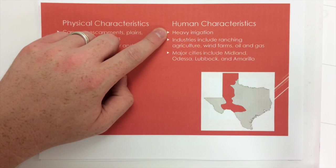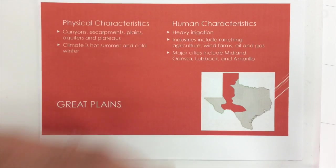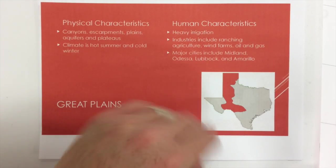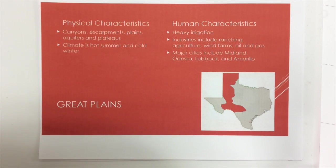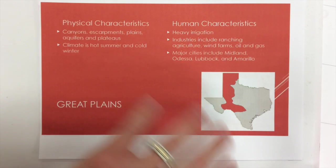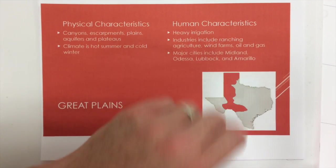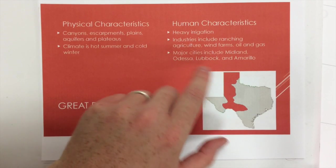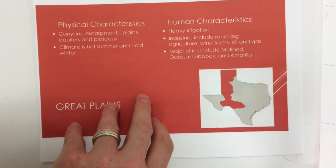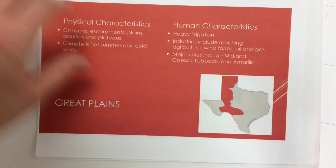The human characteristics of the Great Plains are heavily focused on irrigation, as you can see with the irrigation systems around us here at Terra Vista. Industries include lots of ranching and agriculture because there's lots of land, wind farms between Snyder and Post, and oil and gas industry. Major cities include Midland and Odessa, which are rich in oil and gas, as well as Lubbock and Amarillo.